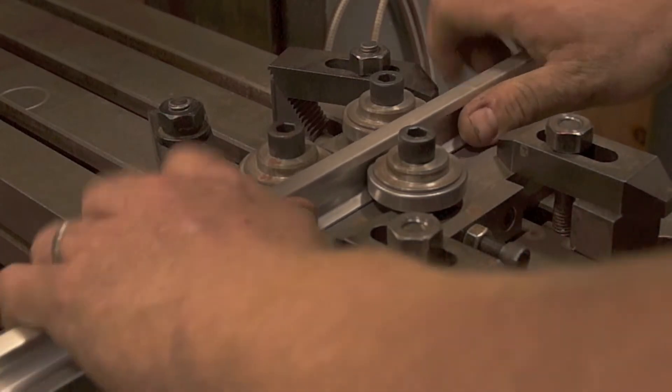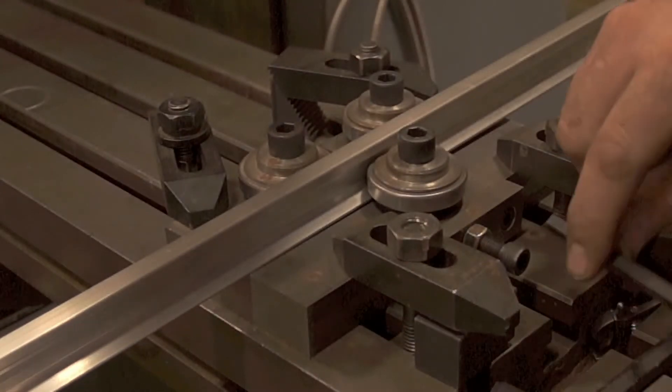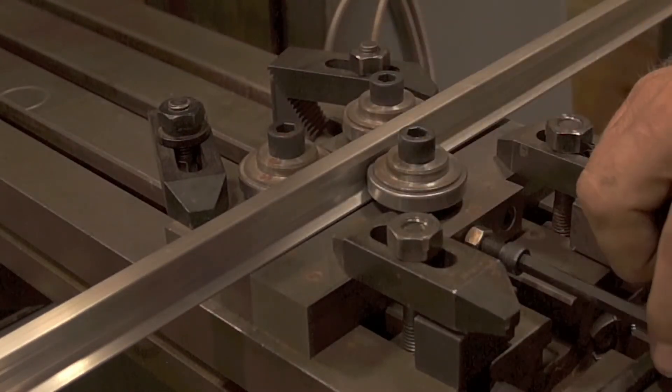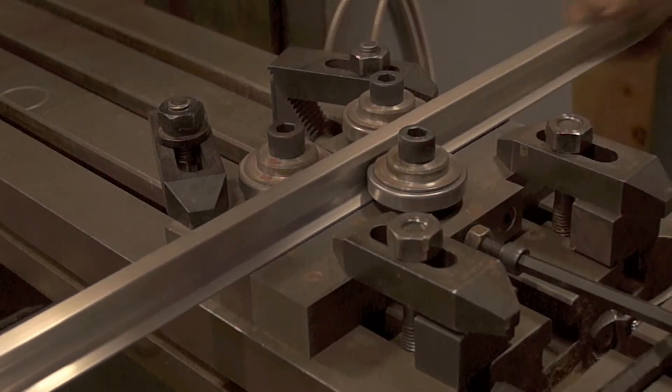So I'll push up against these two bearings here and then just tighten the jam screw here, the adjustment screw, until it's just touching the rail.